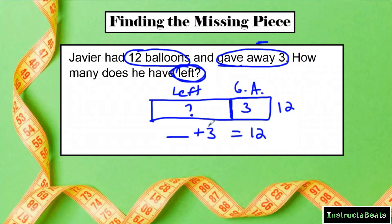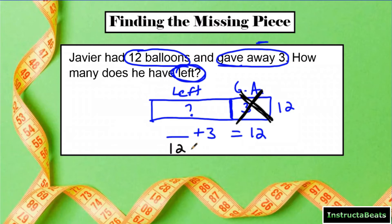Now you can solve this in two different ways. You can start with a number and try to count up by three to figure out what would equal 12. Or, if you're giving something away, you can physically get rid of the three — and if I get rid of my three, that means I have to subtract it from my whole. So we can use fact family knowledge: 12 minus 3.